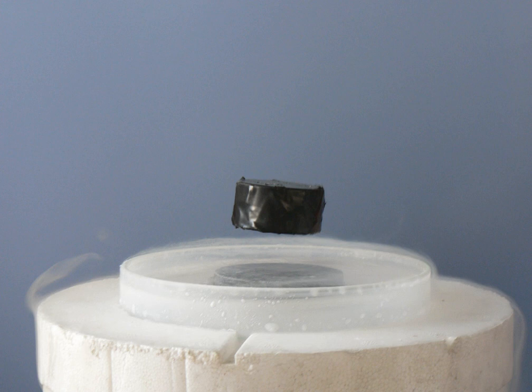In 1986, it was discovered that some cuprate-perovskite ceramic materials have a critical temperature above 90 K. Such a high transition temperature is theoretically impossible for a conventional superconductor, leading the materials to be termed high-temperature superconductors. The cheaply available coolant liquid nitrogen boils at 77 K, and thus superconduction at higher temperatures than this facilitates many experiments and applications that are less practical at lower temperatures.